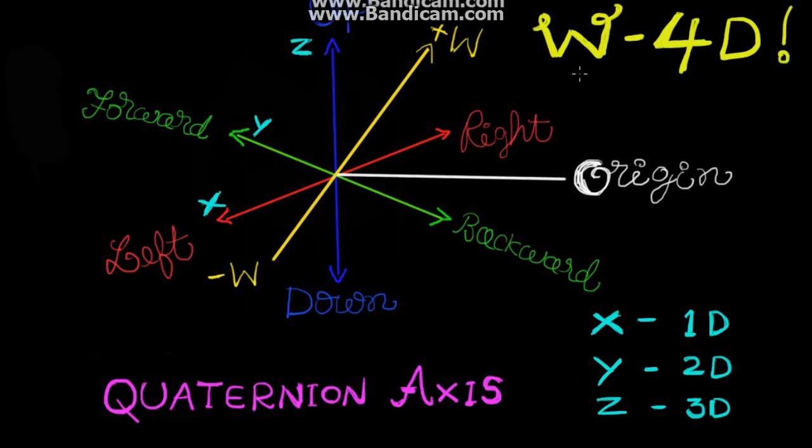The world around us exists in three-dimensional space. Mathematically, these pairs of directions correspond with three coordinate axes, which are conveniently labeled X, Y, and Z. In the 4D world, there is another directional axis, W, which is perpendicular to these axes.